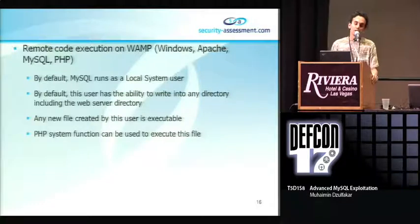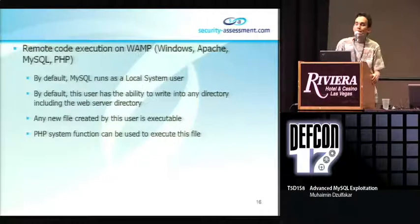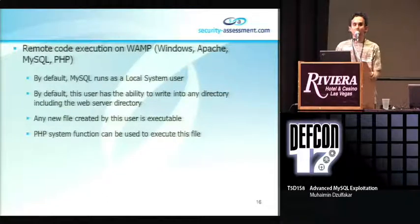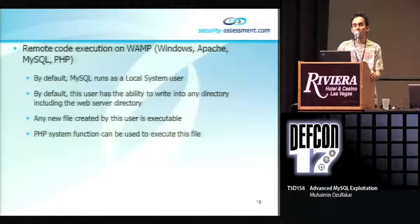Remote code execution on WAMP has fewer limitations compared to LAMP. By default, MySQL runs as a local system on Windows, and this user is allowed to write anywhere in the web server directory. So if we find a WAMP system, we can simply write our arbitrary file into one of the web server directories and then use the same PHP system function technique to execute the arbitrary file.